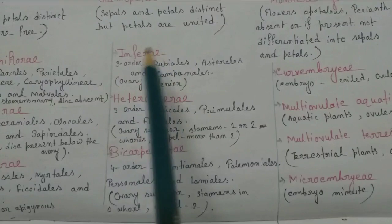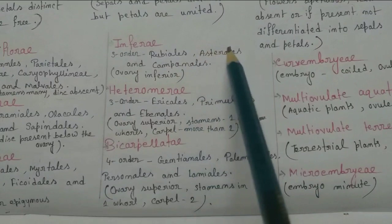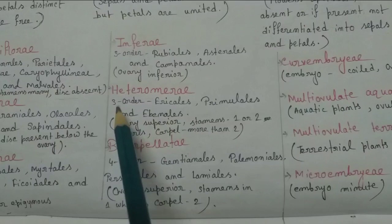The series Inferae is divided into three orders: Rubiales, Asterales, and Campanales.